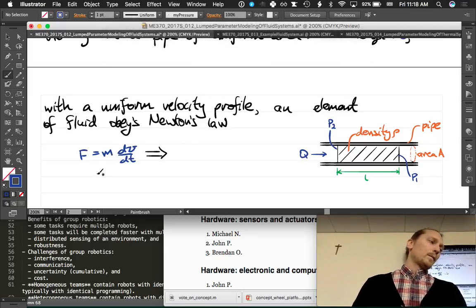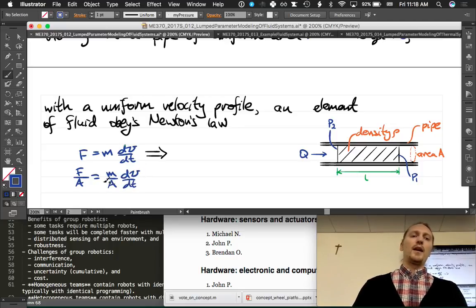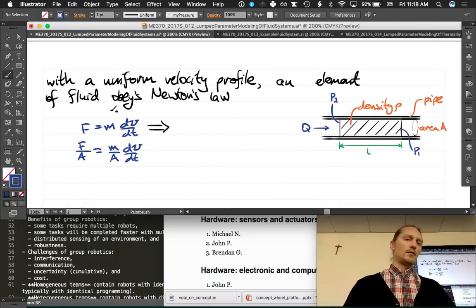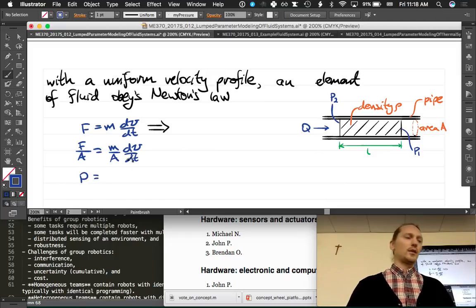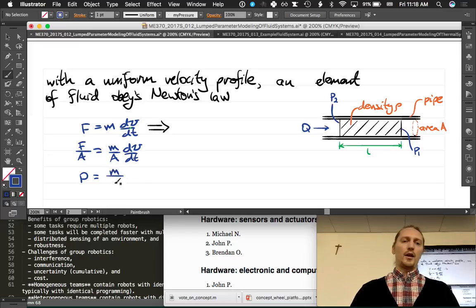Let's apply Newton's law to it. We say that force is equal to m dv/dt, where m is the mass of this fluid element, and v is its uniform velocity. From Newton's law, this has to be true. We can do a little trick here and divide both sides by the area, because force divided by area is something we care about. So the left-hand side, force over area, what did we say that was? Pressure. Pressure is equal to m over a dv/dt.